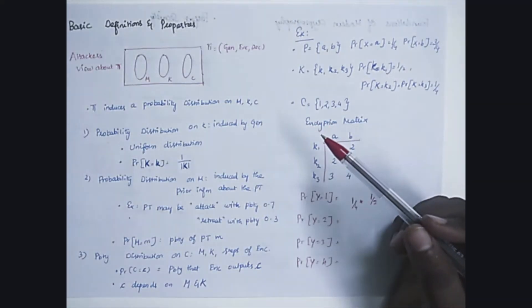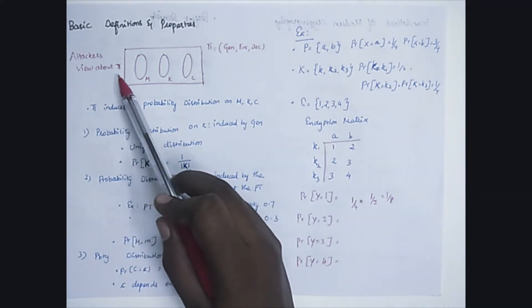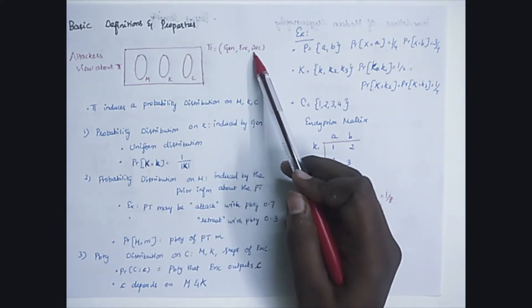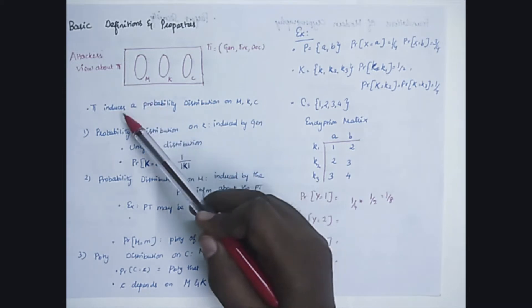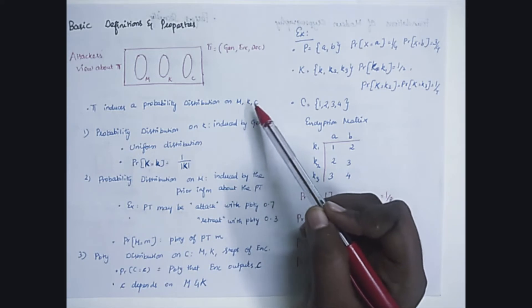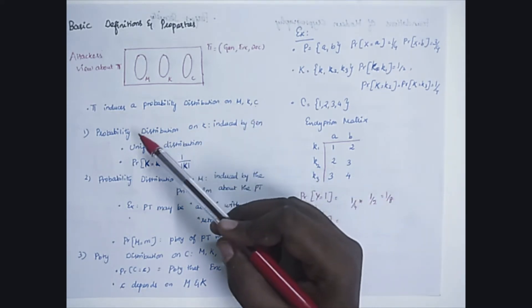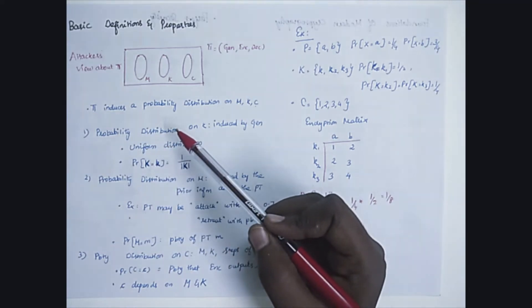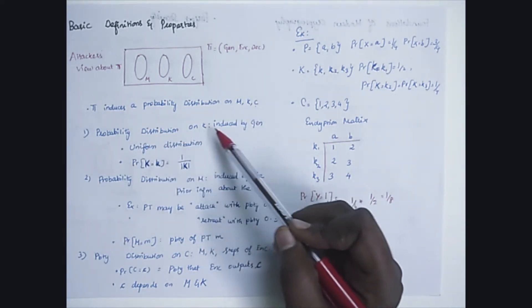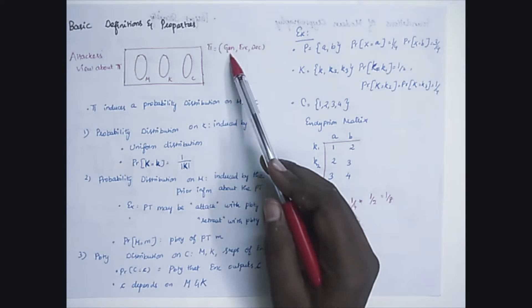Let's see the basic definitions and properties of the Perfect Security model. This is the attacker's view about Pi, which includes key generation, encryption, and decryption functions. Pi induces a probability distribution on message M, key value K, and cipher text message C. The attacker keeps working on the model to get the probability distribution values of M, K, and C. The probability distribution on key value K is induced by key generation.